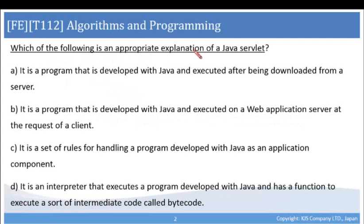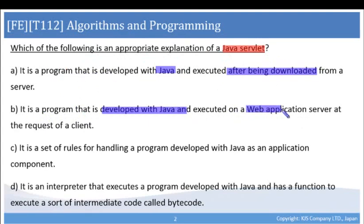Which of the following is an appropriate explanation of a Java servlet? a. It is a program that is developed with Java and is executed after being downloaded from the server. b. It is a program that is developed with Java and executed on a web application server at the request of a client. c. It is a set of rules for handling a program developed with Java as an application component. Or d. It is an interpreter that executes a program developed with Java and has a function to execute a sort of intermediate code called bytecode.